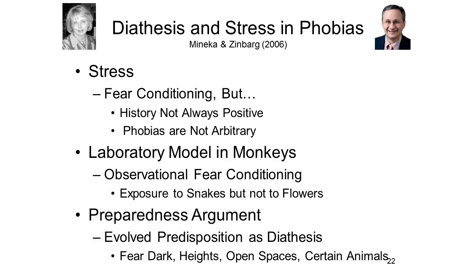Fear of spiders, snakes, and other creepy crawlies. Fear of the dark. Fear of heights and of open spaces. Fear of the gaze of others. Most cases of phobia are accounted for by a relatively small set of phobic objects. So let's take these problems one at a time. If phobias are a product of learning, how can you have a phobia in someone who hasn't had a direct encounter with the object of the phobia?